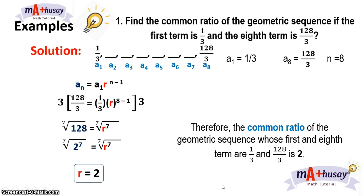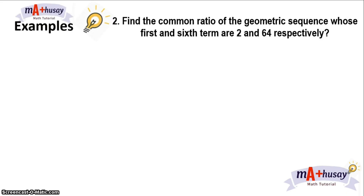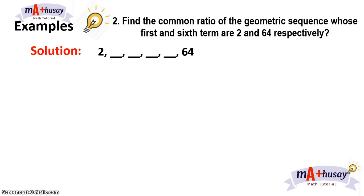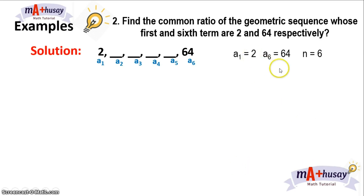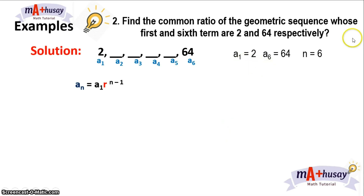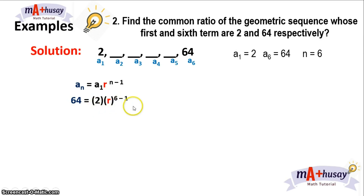Let's have another example in finding the common ratio. Find the common ratio of a geometric sequence whose first and sixth terms are 2 and 64 respectively. We know that there are six terms in the given sequence, and that the first term is 2, the sixth term is 64, and n is 6. Using the geometric sequence formula, we substitute these values: 64 equals 2 times r raised to 6 minus 1.